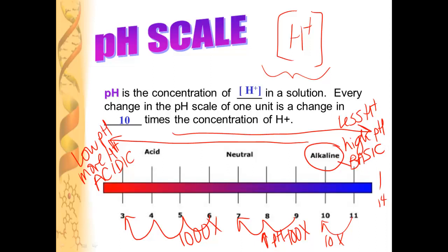So if you have a low pH, you're acidic. If you have high pH, you're basic.